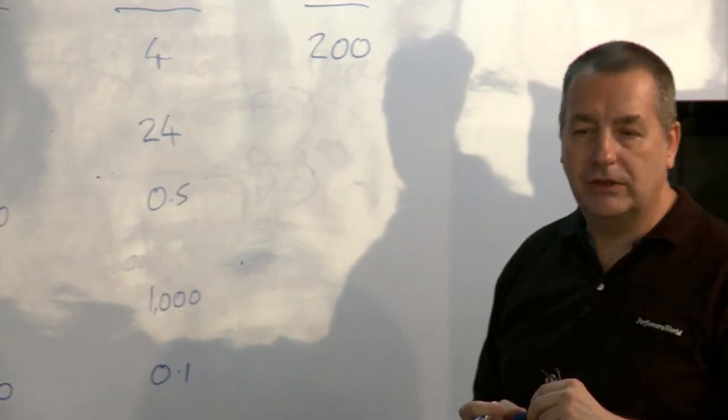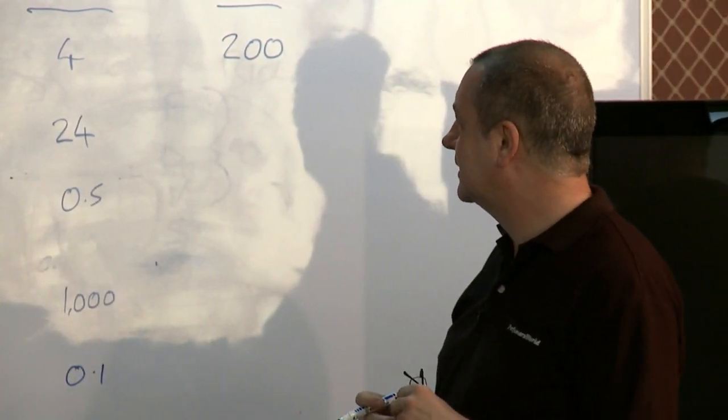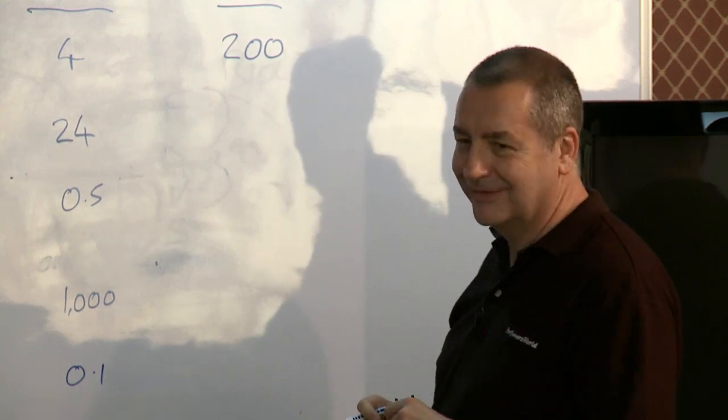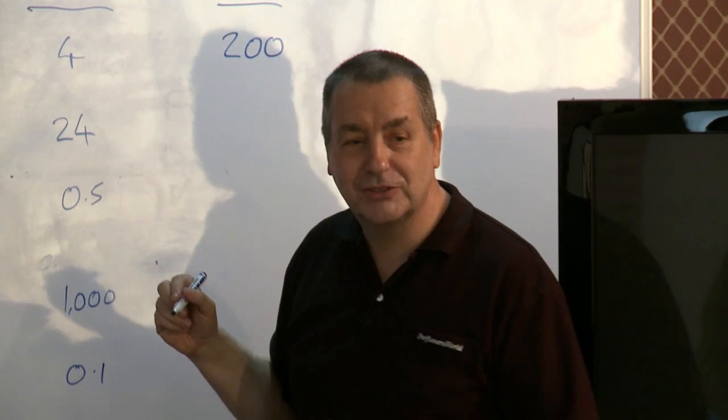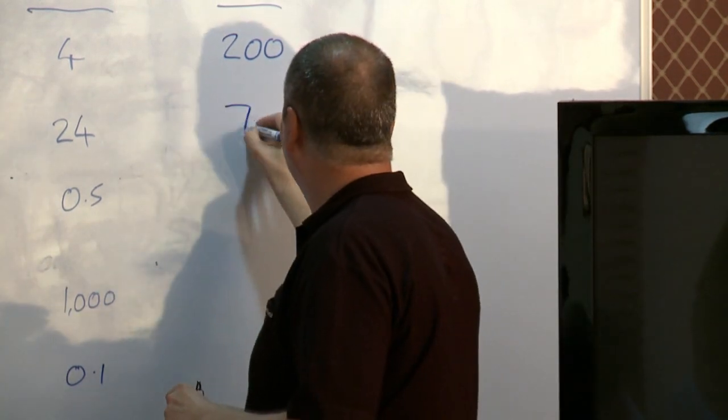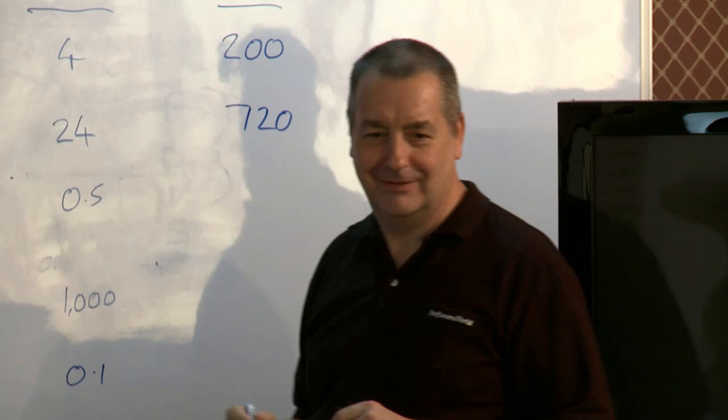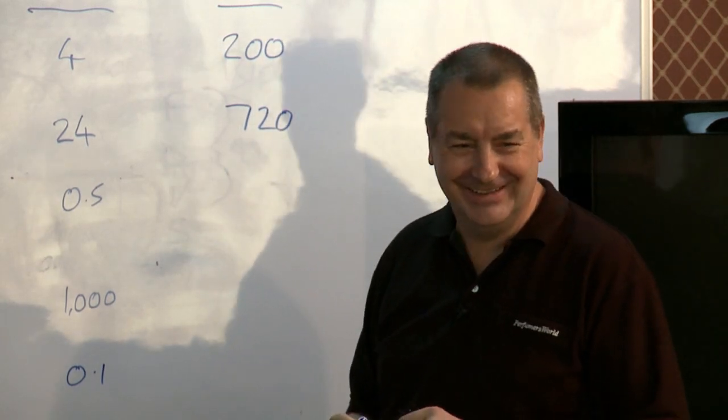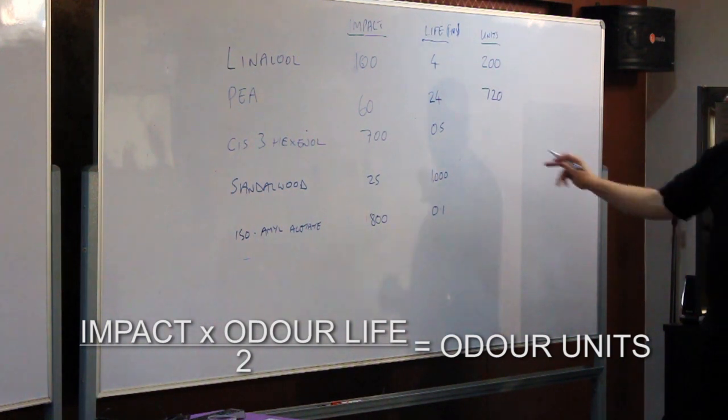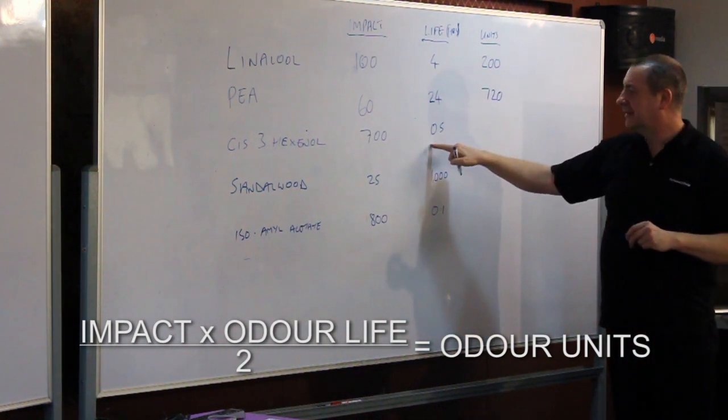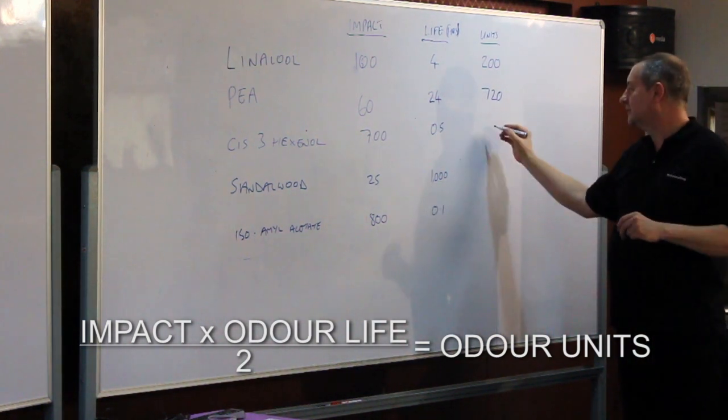Phenyl ethyl alcohol, 60 by 720, is that divided by 2 already? Wow. No calculator. 350? 175. 175 because we've divided by 2.